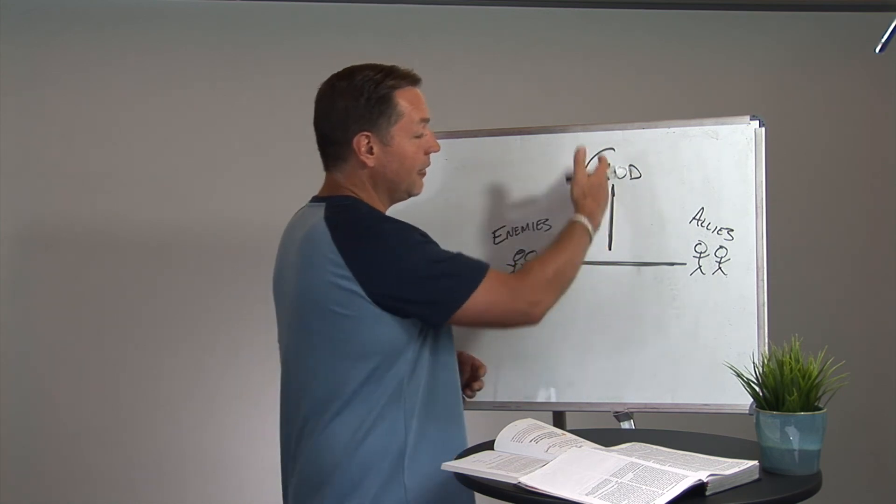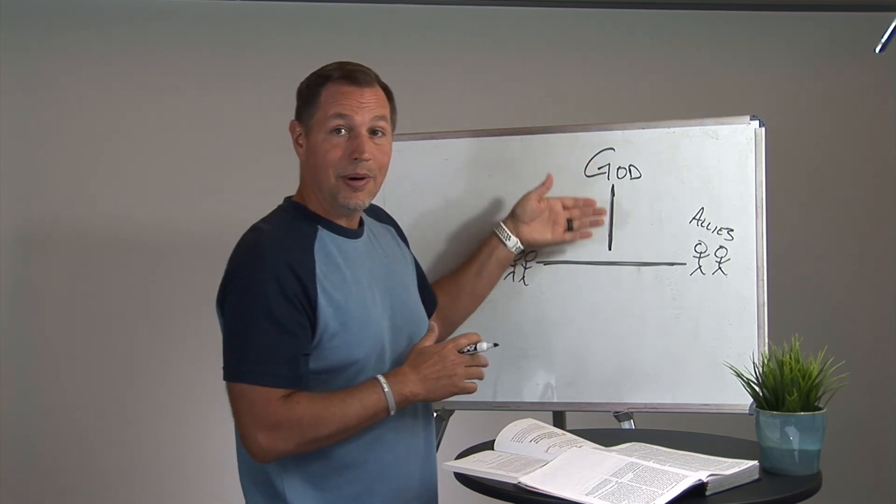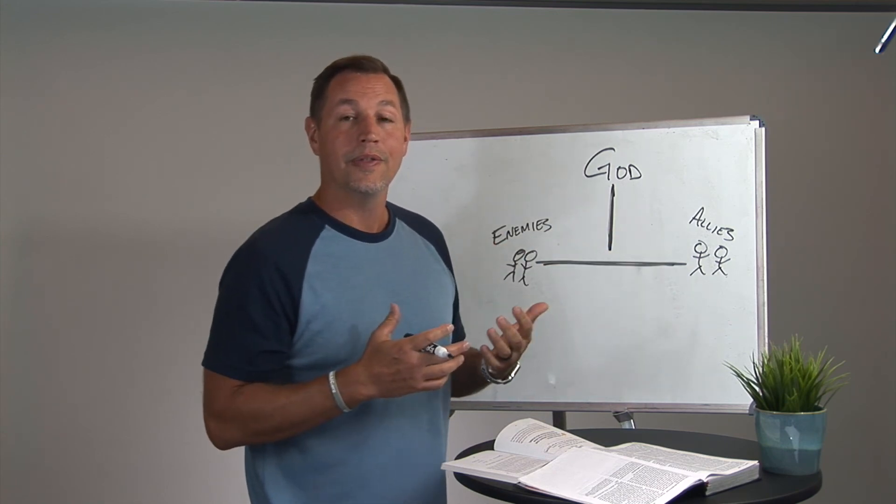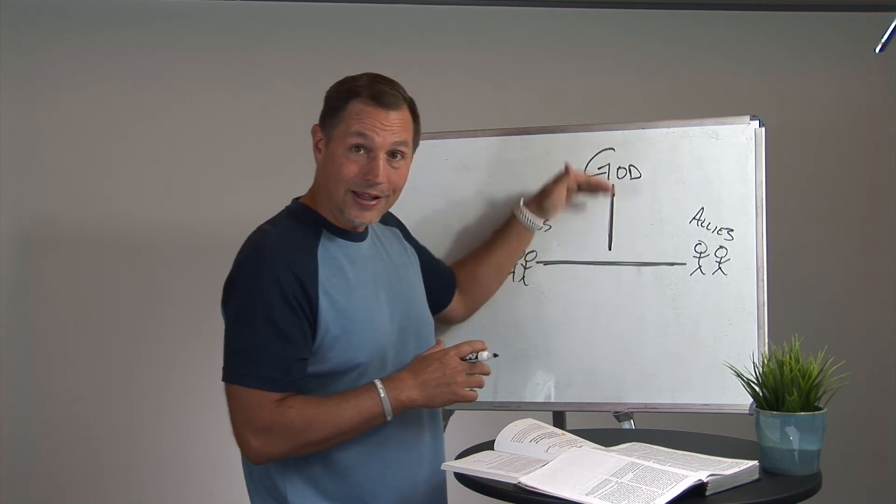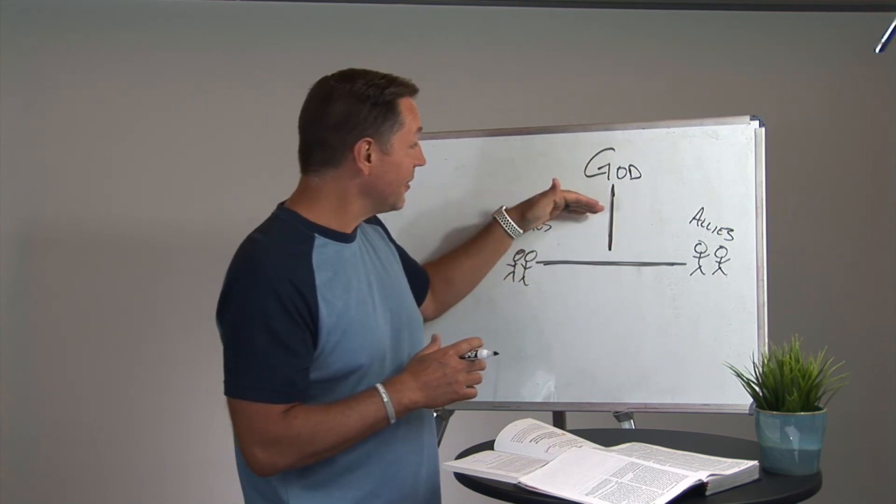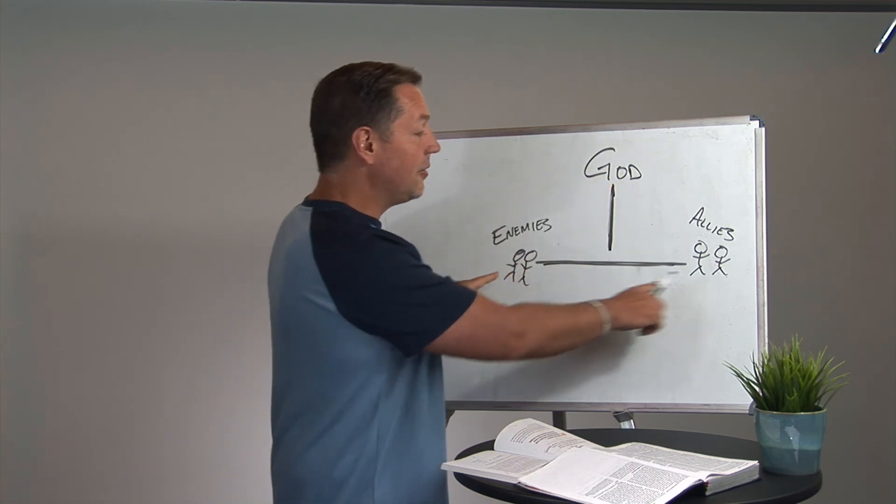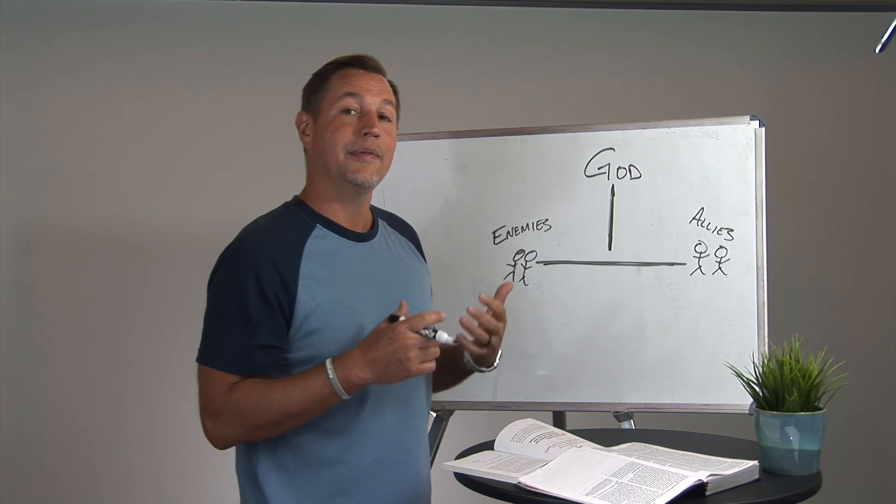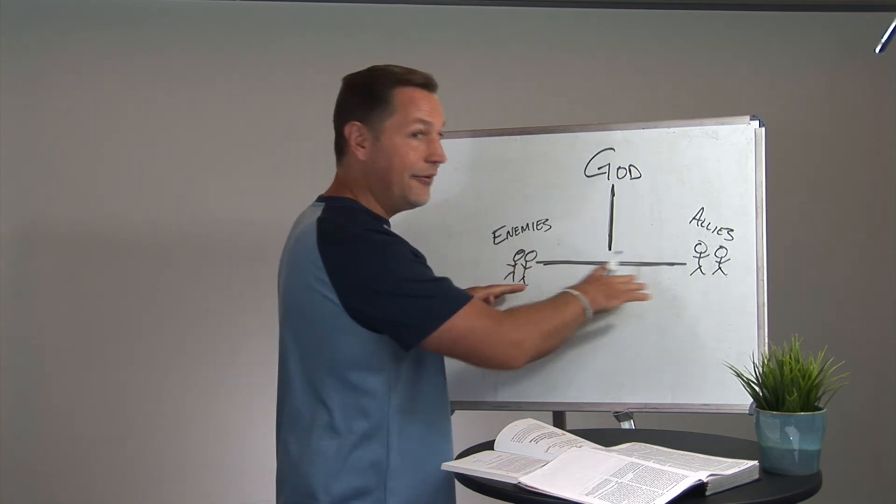When you just have the vertical love, these are kind of the people that it's just about God, and they don't see others as any part of their walk with God. These are called Pharisees. And so Pharisees are the ones that just try to make themselves right with God, but they don't care about how they're loving horizontally. They don't understand that they have a call and a responsibility to love others.